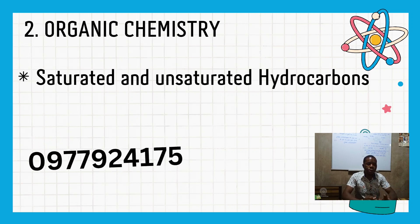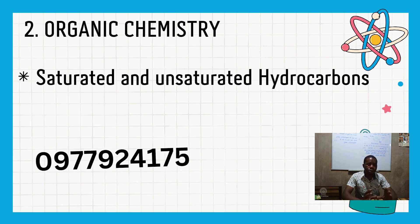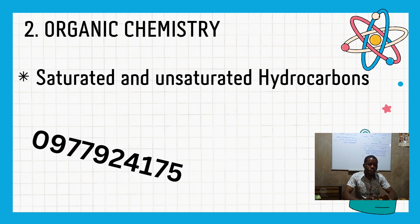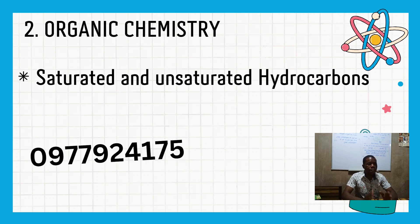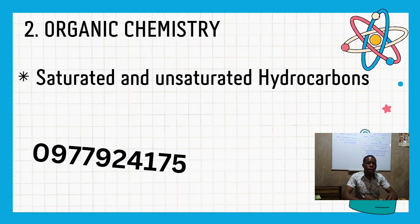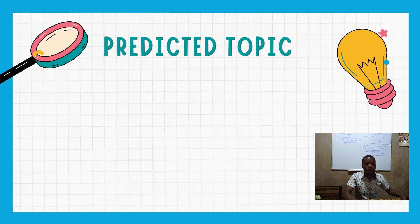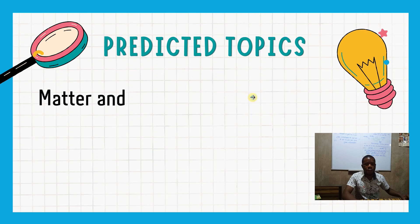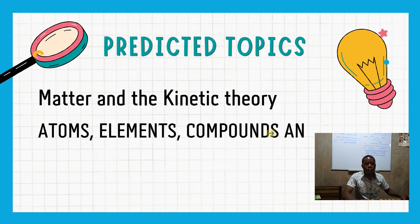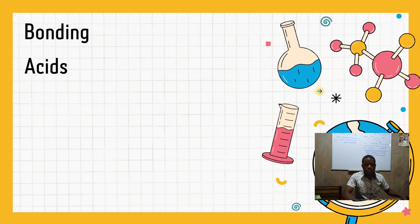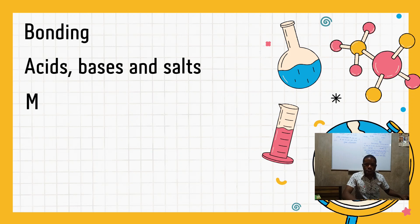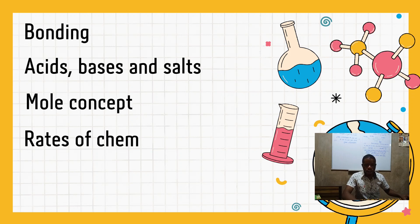Now we move to the second part of this video — the predicted topics that have been analyzed and identified as likely to appear in this year's Science Paper 2. The predicted topics are: matter and the kinetic theory, atoms elements and compounds, bonding, acids bases and salts, and the mole concept.